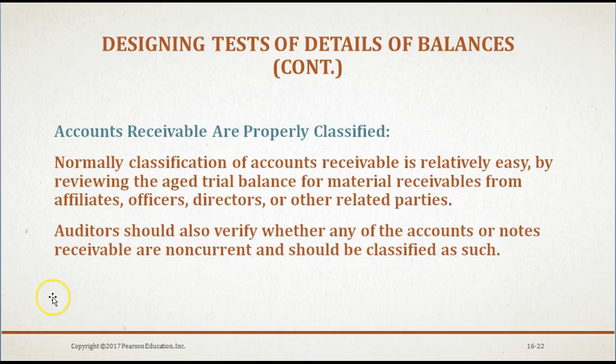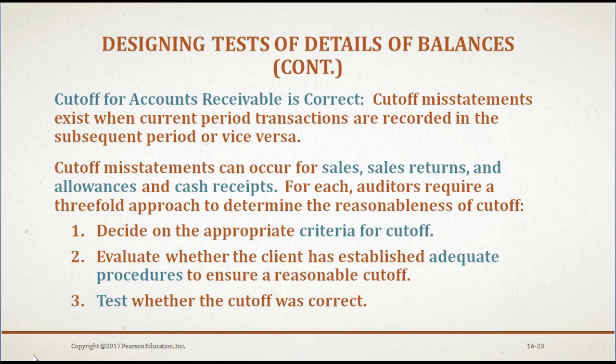Classification of accounts receivable is relatively easy by reviewing the Aged Trial Balance for material receivables from affiliates, officers, directors, or other related parties. Auditors should also verify whether any accounts or notes receivable are non-current and should be classified as such. Cutoff misstatements exist when current period transactions are recorded in the subsequent period or vice versa, and can occur for sales, sales returns, and allowances and cash receipts.